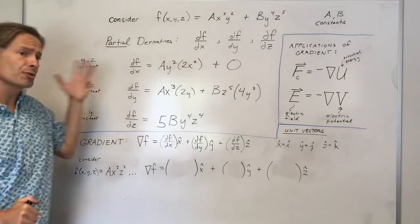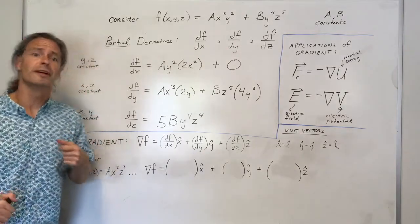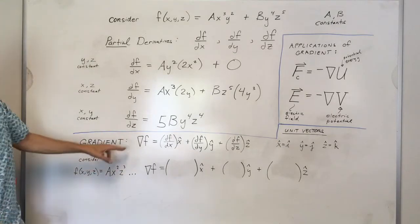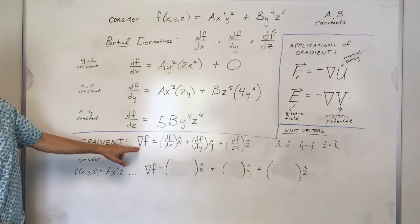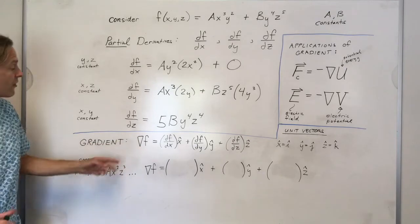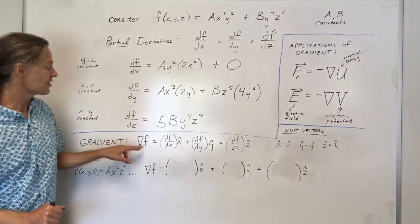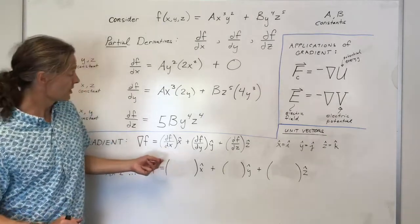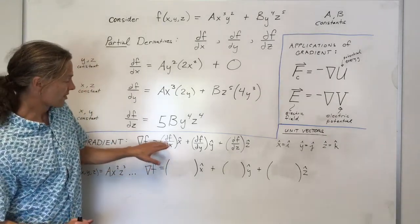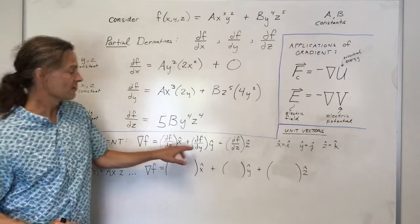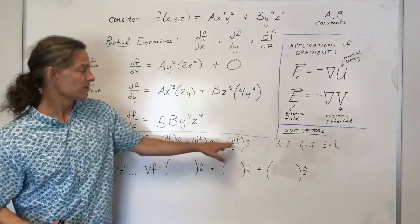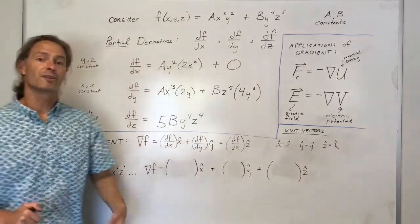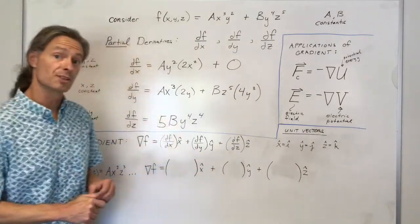Partial derivatives are useful in their own right, but they're also very important as part of something known as a gradient. This downward-pointing triangle in front of an f means the gradient of f. The gradient of f is a vector — it has something times x̂ plus something times ŷ plus something times ẑ, where x̂, ŷ, and ẑ are unit vectors pointing in the x, y, and z directions respectively.